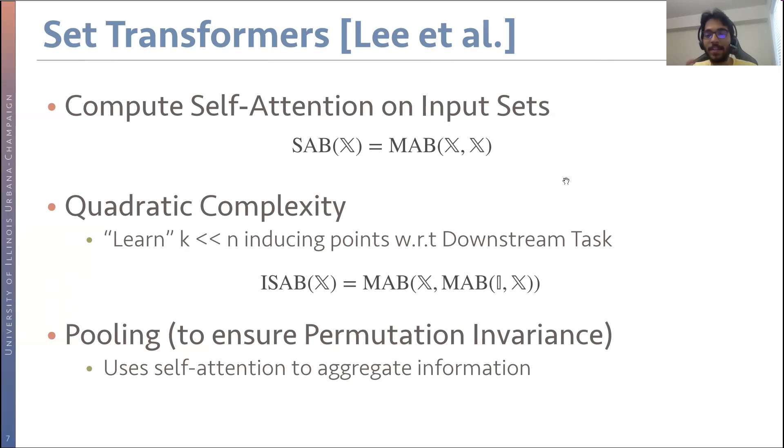An immediate drawback of this is because it's computing attention, it has to compute a distance between all the points in the input, which is quadratic in the input. That could be expensive for large sets. So instead of doing that, what the authors propose is to induce or learn a smaller subset of k points from the bigger subset, such that these k points are chosen in a way to optimize your downstream task more efficiently. This reduces the complexity from quadratic to n times k. Then what this model does is to ensure permutation invariance, it aggregates or pools the information using self-attention at the final stage.